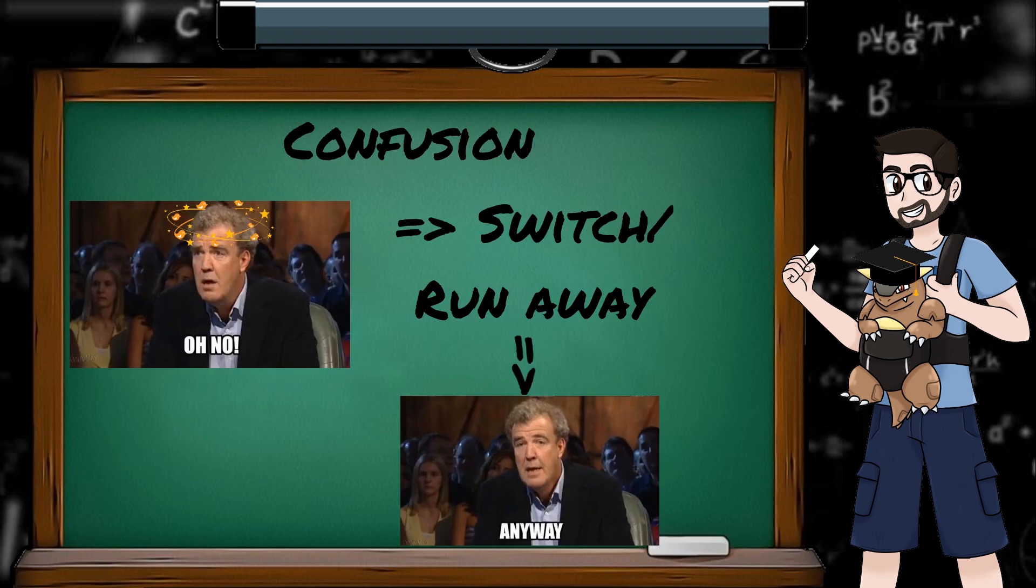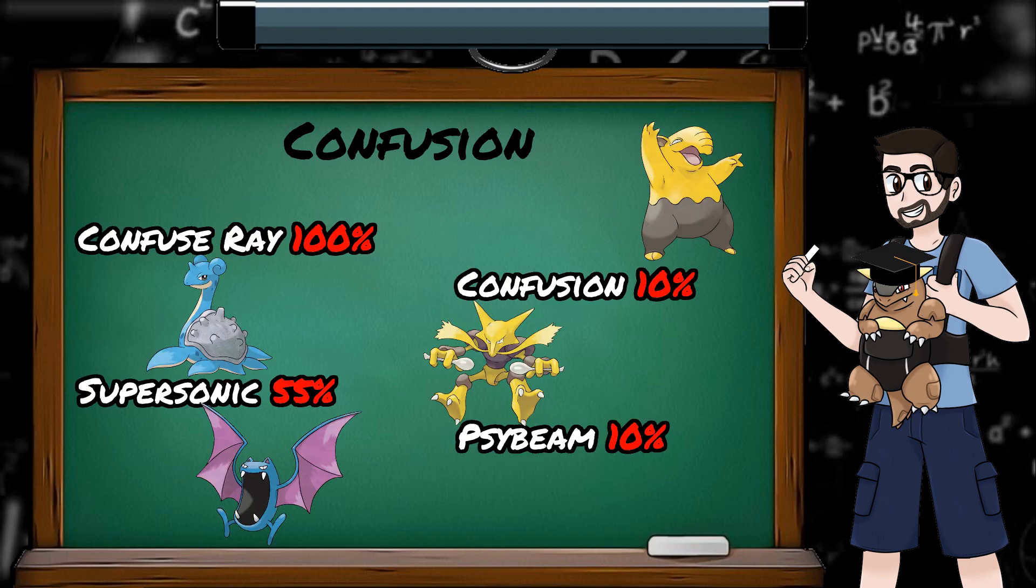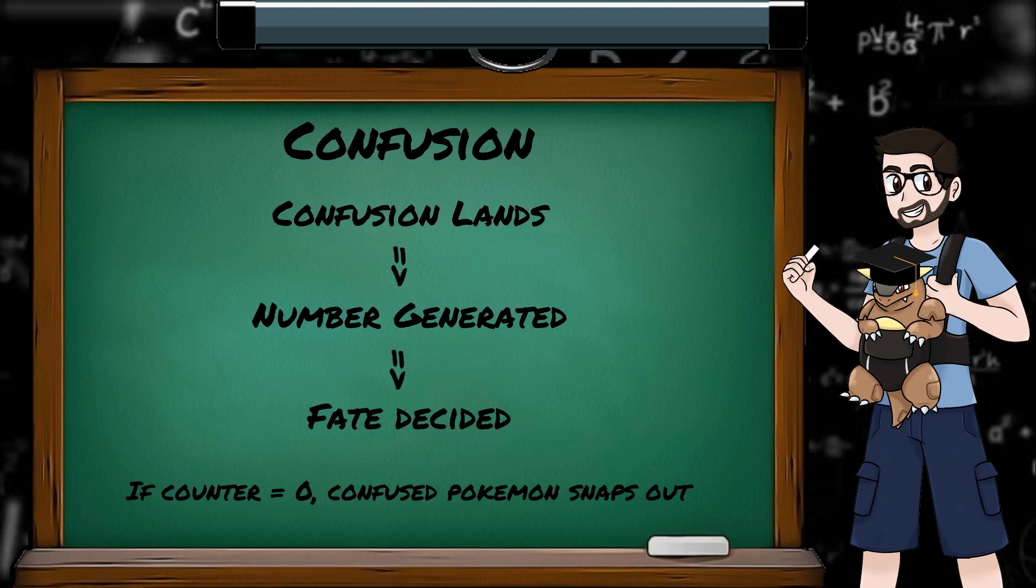Okay, let's have a look at confusion. Unlike sleep, confusion is a volatile status condition, which means we don't get a fancy icon telling us our Pokemon is suffering from it, and also it doesn't persist across switches or exiting a battle. The moves that cause confusion are as follows. Note the confusion status is a secondary effect of confusion in Psybeam. The accuracy for those attacks to hit is 100%, but the chance to confuse the target is 10%. Confusion works similarly to sleep, in that when a Pokemon gets inflicted with it, the random counter number is generated, and there's no wishing it away. It will last until the counter hits 0.